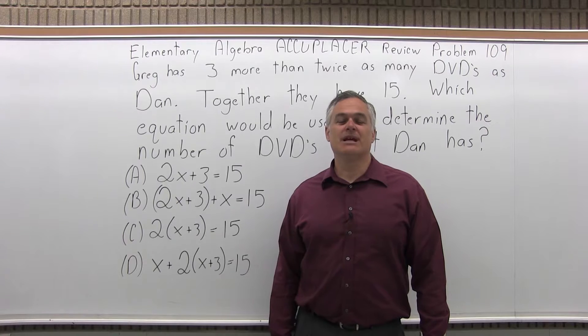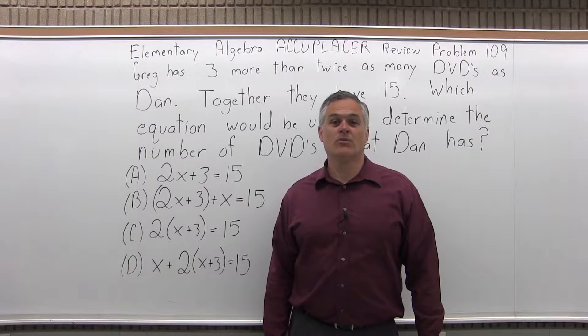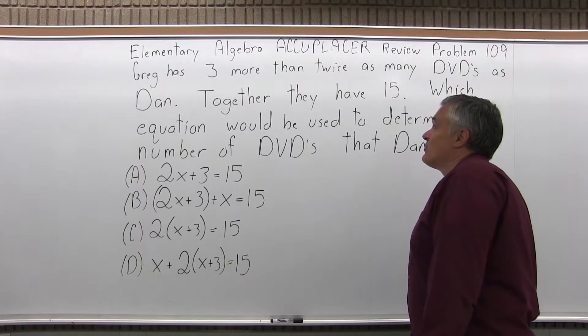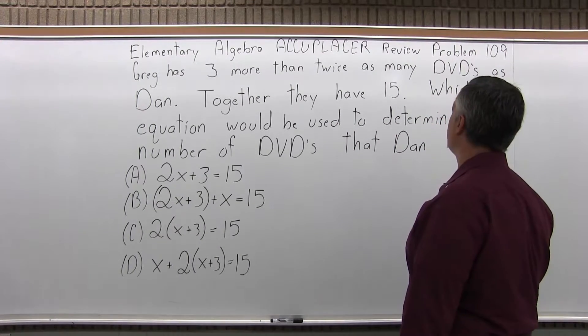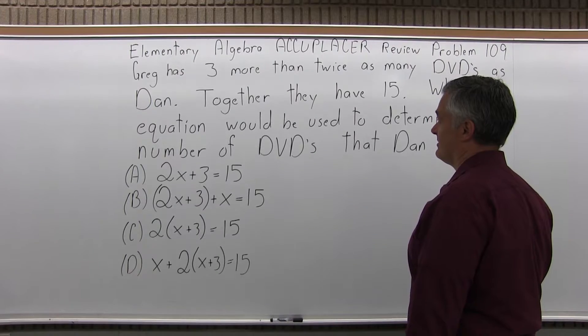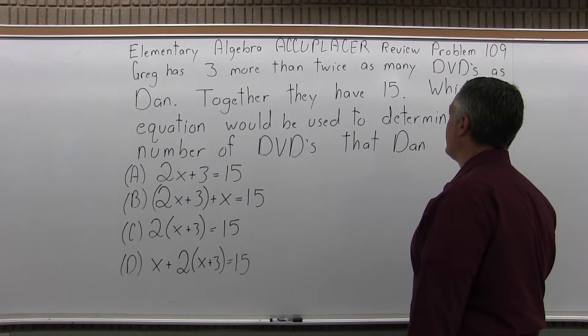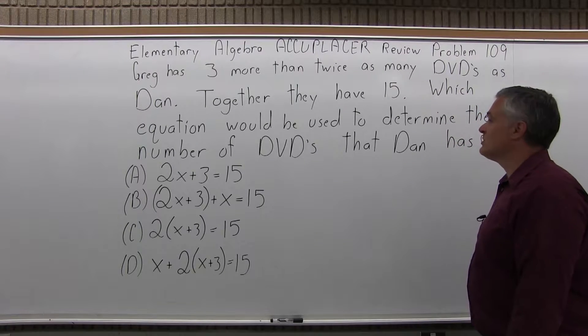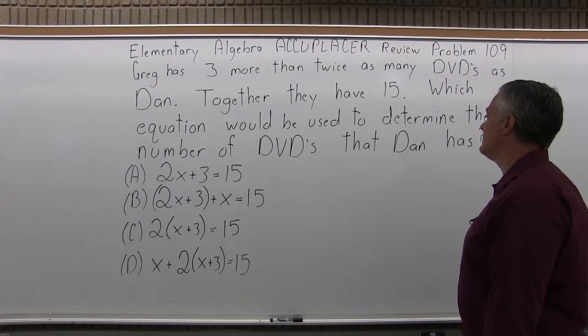This is the Elementary Algebra Accuplacer Review, Problem 109. It says, Greg has three more than twice as many DVDs as Dan. Together, they have 15. Which equation would be used to determine the number of DVDs that Dan has?